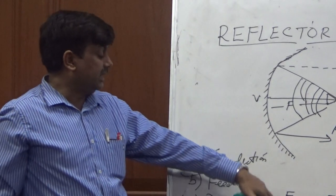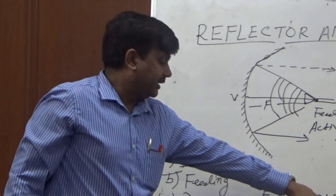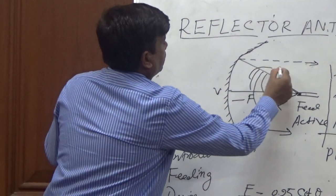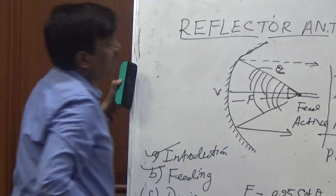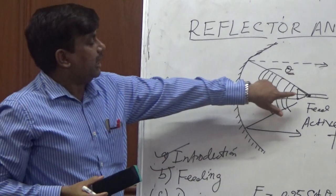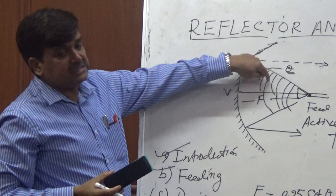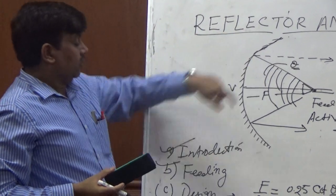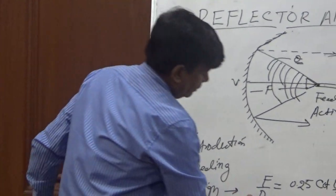So where F is focal length, D is aperture, and theta is angle at which this primary antenna is radiating or transmitting the energy and falling inside the inner surface of the reflector. So this is only one design parameter which is very useful.